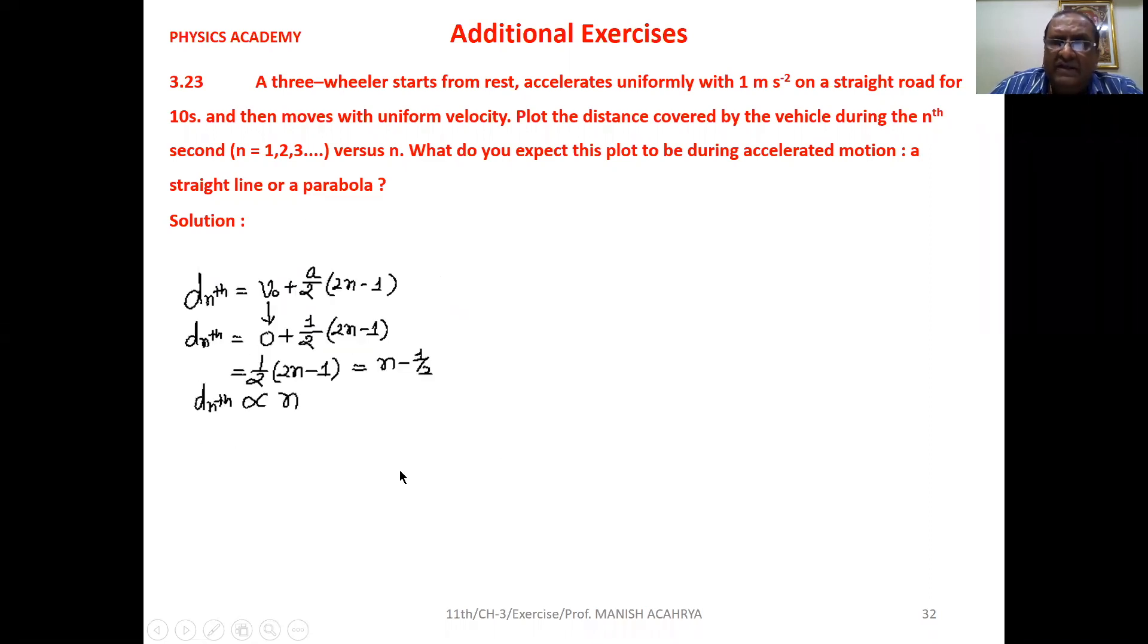We already discussed the equation for distance traveled in nth second: V₀ plus a by 2 into 2n minus 1. Initial velocity is 0 because the three-wheeler starts from rest, so V₀ is 0.